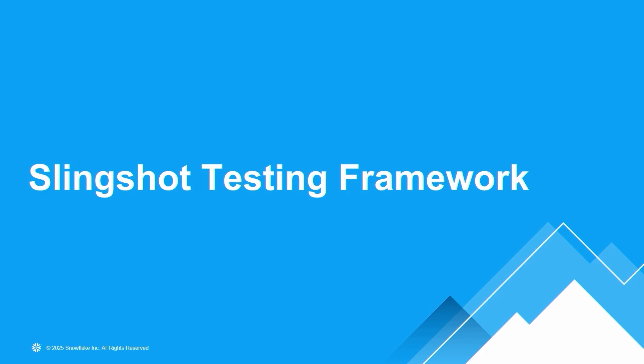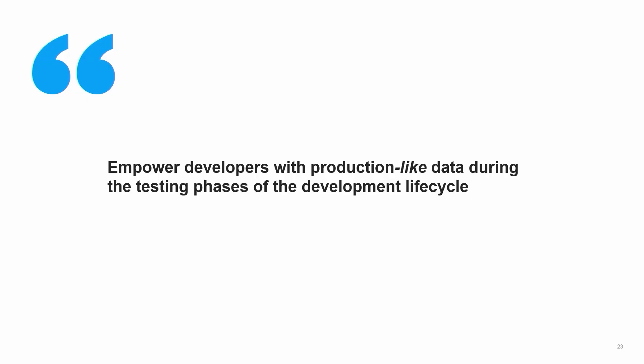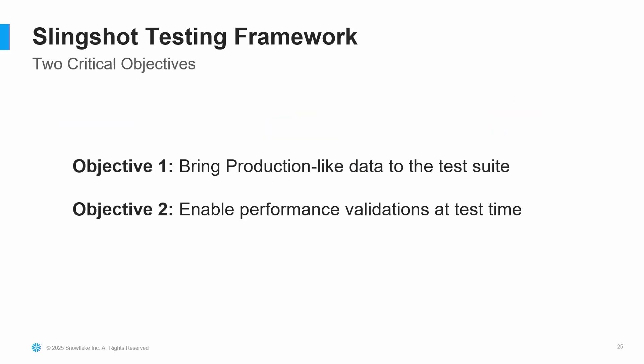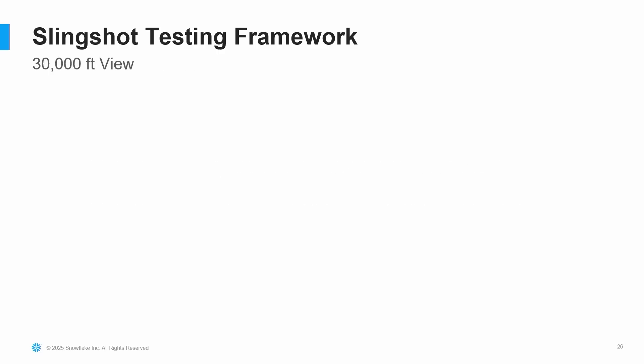Thanks, Kishore. Hi, everyone. My name is David Ellis. I'm going to talk about how the Slingshot testing framework helps solve some of these problems. At its core, the Slingshot testing framework is a library that we wrote in-house to help solve these data engineering challenges. The mission statement is to empower developers with production-like data during the testing phases of the development lifecycle. When we set out to build this, the question was: what does success look like? The same challenges Kishore outlined — disparate sources, statefulness, and cost. How can we build something that gains confidence in each of these things earlier as we develop our applications? That manifests into two distinct objectives: bring production-like data to the test suite, and enable performance validations at test time — making performance a first-class assertion.